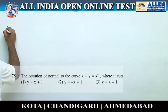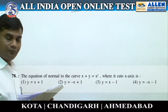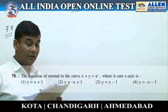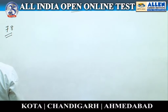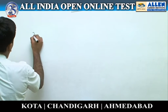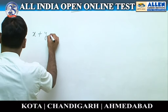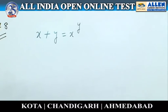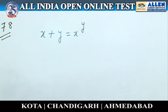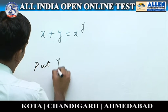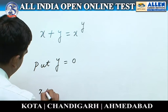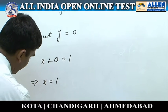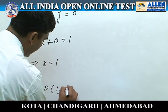Question number 78: The equation of the normal to the curve x + y = x^y where it cuts the x-axis. The curve is x + y = x^y. Where the curve cuts the x-axis, y = 0. Therefore, putting y = 0: x + 0 = 1, which implies x = 1. Therefore the point P is (1, 0).